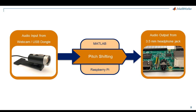MATLAB support package for Raspberry Pi allows you to interface with audio input and output devices like webcams, USB microphones, and speakers connected to the 3.5mm headphone jack of your Raspberry Pi. The real game changer in this prototyping process is the ability to develop audio processing algorithms in MATLAB and then generate a deployable application which can replicate this behavior on your hardware.